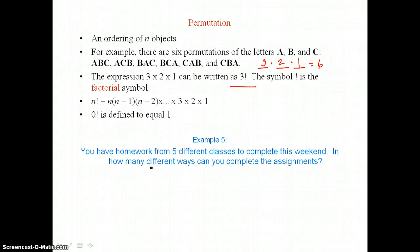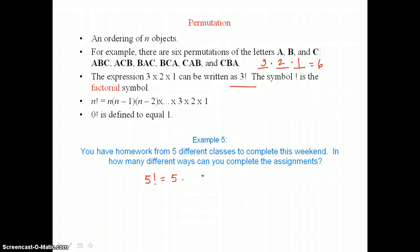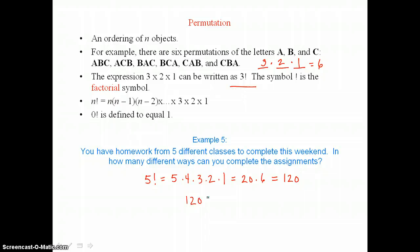Back to example five: you have homework from five different classes to complete this weekend. The number of different ways to complete the assignments is five factorial, or five times four times three times two times one, and that product is twenty times six or one hundred twenty. So there are one hundred twenty different ways to complete those five assignments.